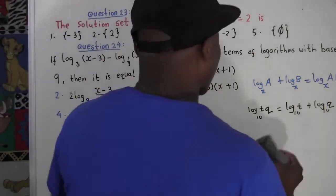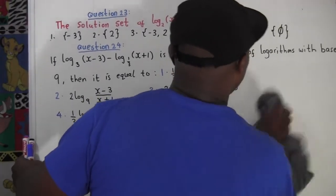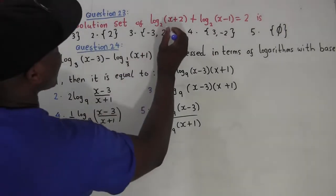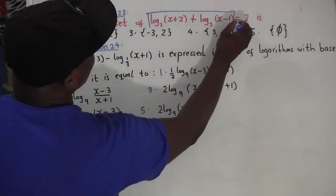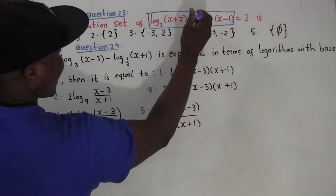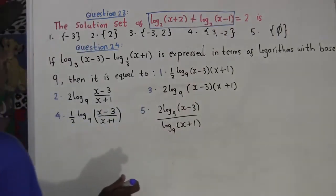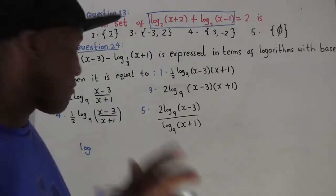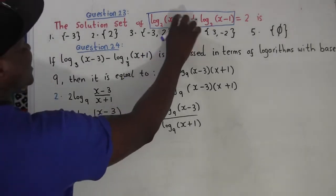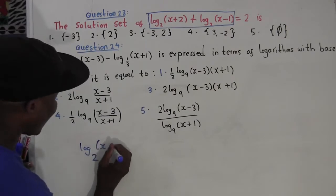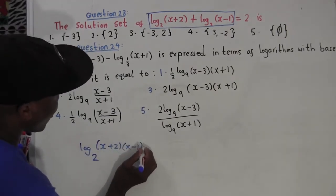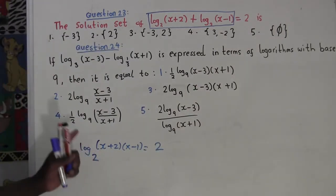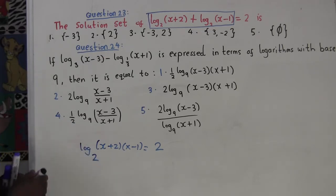Now let's solve the question. Before applying the exponential rule, I notice these two log terms have the same base and are added together, so I can multiply them. I write log base 2 of the product, which is (x plus 2) times (x minus 1). After applying the law of multiplication, I now have log base 2 of (x+2)(x−1) equals 2.